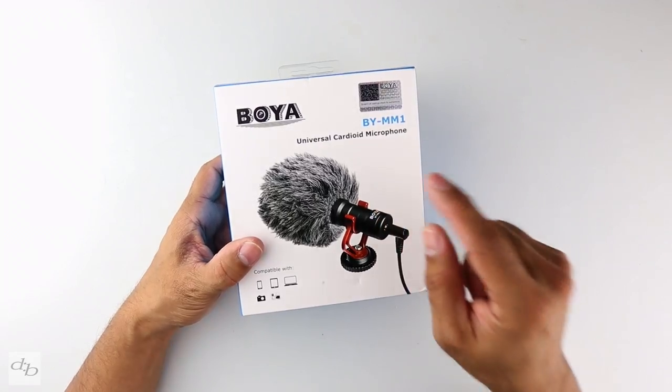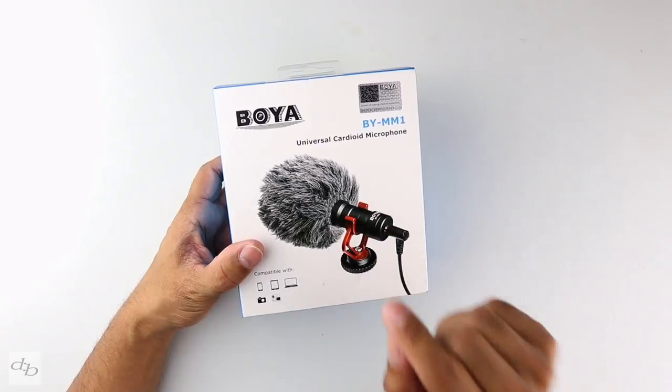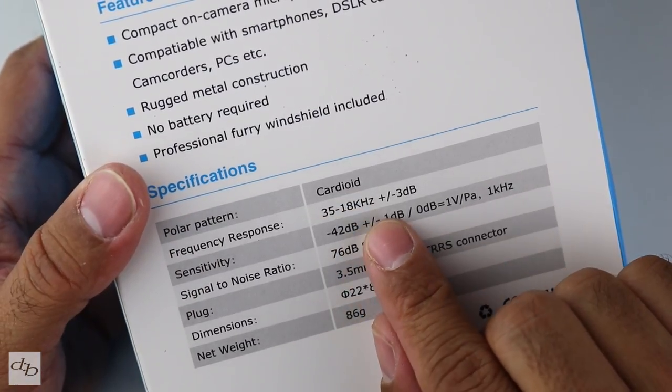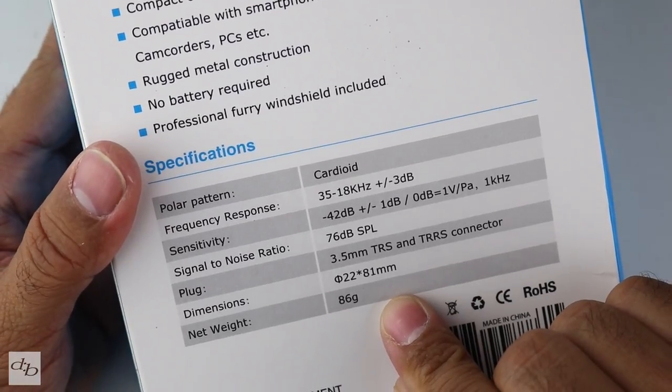At barely 15 pounds, is this the best budget mini shotgun mic on the market? Let's take a look. Cardioid pattern, 35 to 18 kilohertz. If you want to read that, just pause.